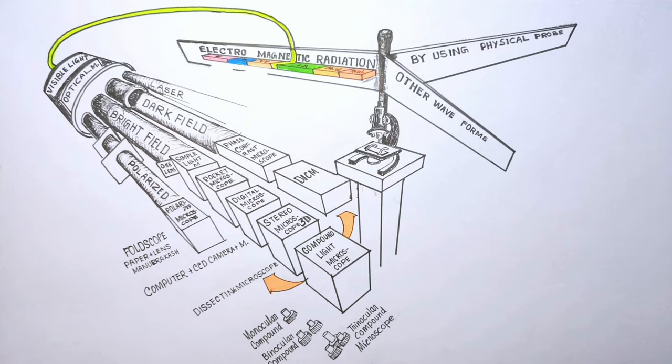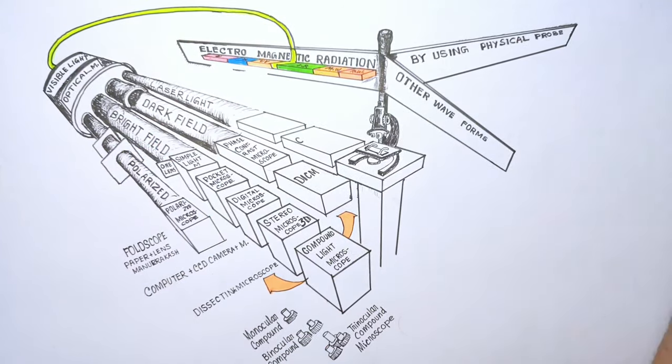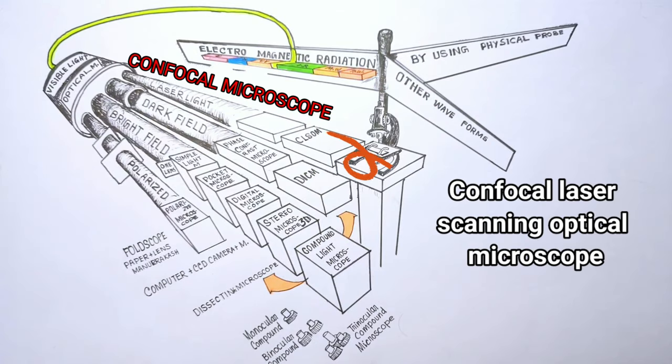Next type of microscope is confocal microscopes better known as confocal laser scanning optical microscope or CSOM. Here dyed samples are scanned by laser lights instead of regular light which with the aid of a dichromatic mirror. CSOM can capture multiple 2D images at different depths in a sample and the operator can create 3D image as well by assembling those multiple scans. This type of microscope is commonly used in biological and medical research.